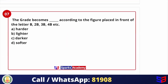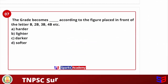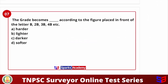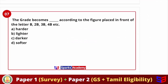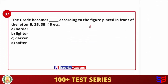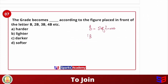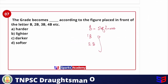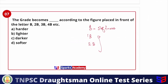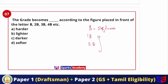Next question: the grade becomes dash according to the figure placed in front of the letter B — options are harder, lighter, darker, or softer. B represents softness. As the numbers increase — 1B, 2B, 3B, 4B — the softness increases in increasing order. So the grade becomes softer; the answer is softer.